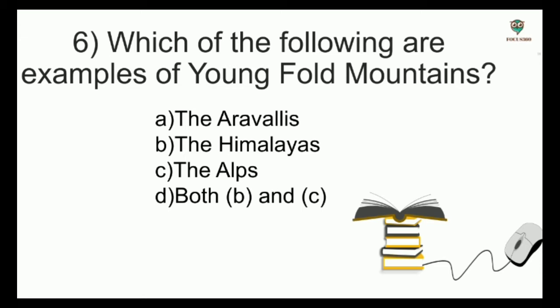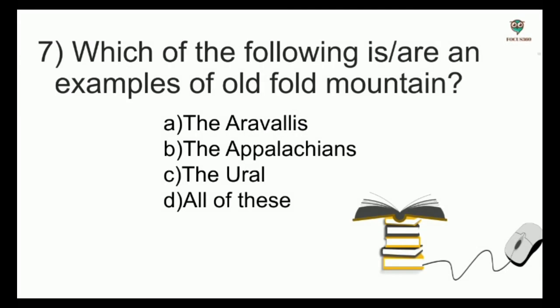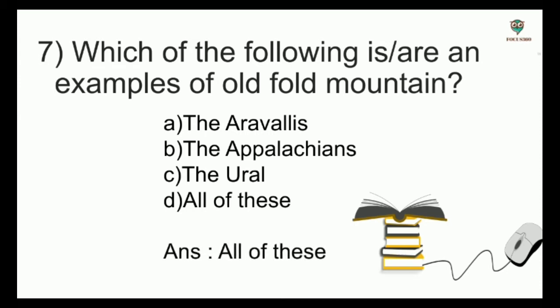Which of the following are examples of young fold mountains? Options: the Aravalis, the Himalayas, the Alps, both B and C — and the answer is both B and C, that is the Alps and the Himalayas. Next, which of the following are examples of old fold mountains? Options: the Aravalis, the Appalachians, the Urals, all of these — and the answer is all of these.